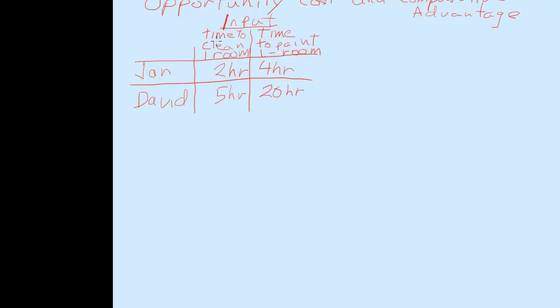We have two people, Jan and David, and we were looking at time to clean one room in hours. So we have two hours for Jan to clean a room, five hours for David to clean a similar sized room. Jan can paint a room in four hours. David takes five times longer to paint a similar room, while David takes two and a half times longer to clean the room.